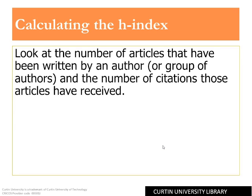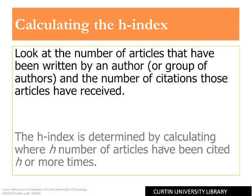To calculate an H-Index, you need to look at the number of articles that have been written by an author or group of authors and the number of citations those articles have received. The H-Index is determined by calculating where H number of articles have been cited H or more times. For example, an H-Index of 15 means that out of all of an author's publications, 15 articles have received at least 15 citations.